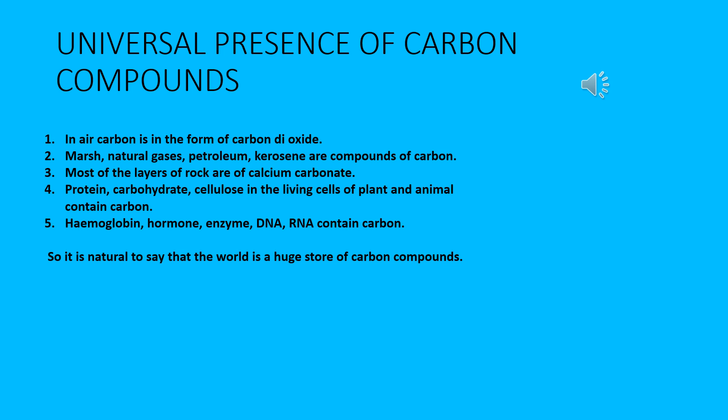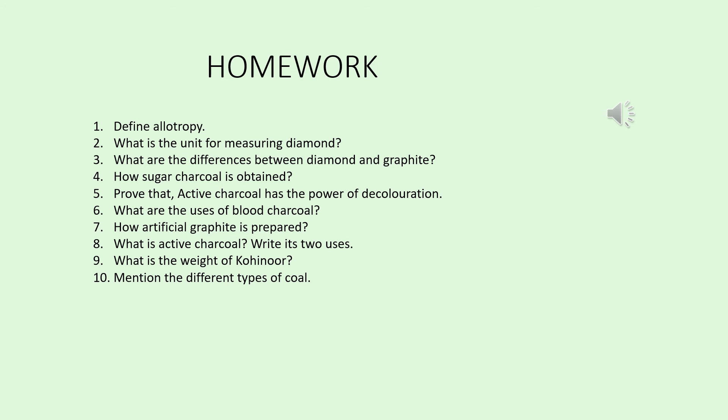Now, the universal presence of carbon. From previous discussion, we know about carbon in its elemental form. Carbon is also present in compounds everywhere. In air, carbon is in the form of carbon dioxide. Natural gases, petroleum and kerosene are compounds of carbon. Most rock layers are of calcium carbonate (CaCO₃). Proteins, carbohydrates and cellulose in living cells of plants and animals contain carbon. Hemoglobin, hormones, enzymes, DNA (deoxyribonucleic acid) and RNA (ribonucleic acid) also contain carbon. So the world is a huge store of carbon compounds.